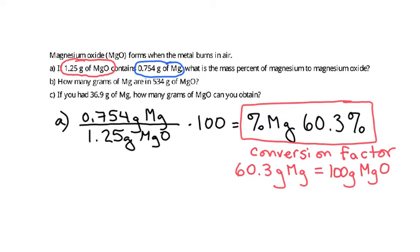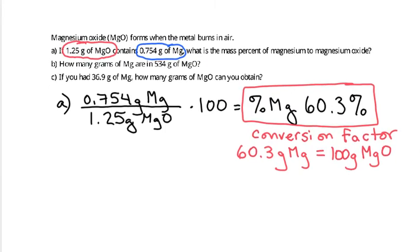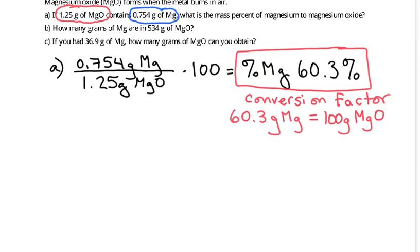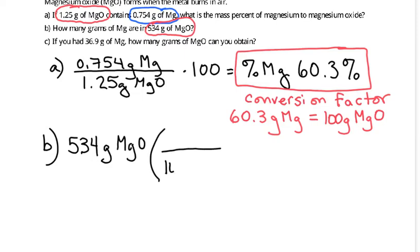But what it's saying is there's 60.3 grams of magnesium for every 100 grams of the compound magnesium oxide. So all I did was I took that percent and it's 60.3 grams of the magnesium in 100 grams of the magnesium oxide. So we can use this conversion factor now for B and for C. So how many grams of magnesium are there in 534 grams of magnesium oxide? That's what we're going to put on the outside and we're going to use our conversion factor to get us to where we need to be. So 534 grams of magnesium oxide.